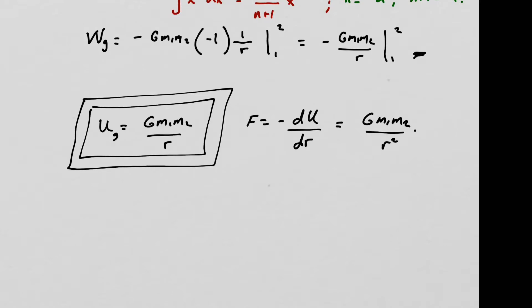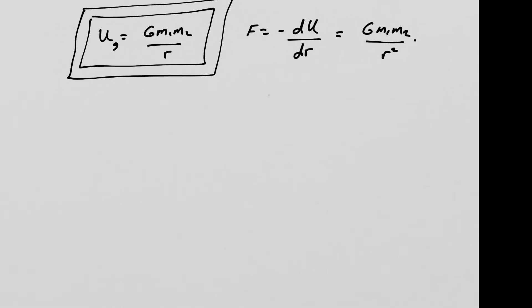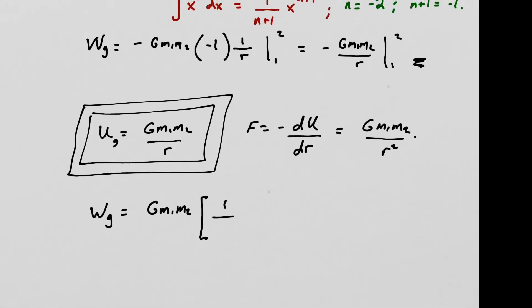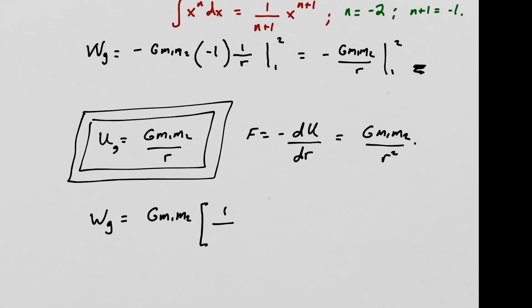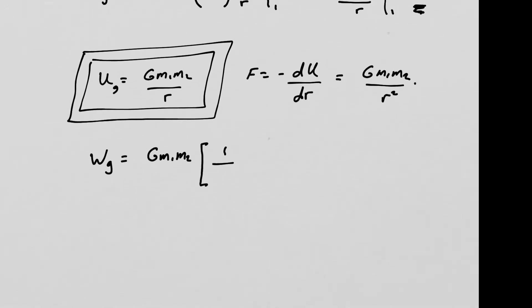Namely, let's plug in the actual limits here. Well, if we do that then, the work done by gravity is a g, m1, m2, one over, and if we apply the fundamental theorem of calculus, r2 minus r1.